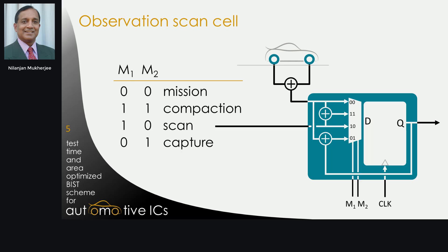This slide shows the structure of the observation scan cell. Instead of one 2x1 mux, we need a 4x1 mux with two select inputs. When the select inputs are 00, the scan cell operates in normal functional mode. When the select inputs are 01, the scan cell captures during shift, thereby behaving as a long compactor. When the select inputs are 10, the structure operates as a regular scan cell — in other words, this mode disables the shift and capture operation. When the select inputs are 11, the scan cell is in capture mode, where the Q output is XORed with the circuit response before being captured. This is necessary to preserve the fault effects captured in observation scan cells during shift.